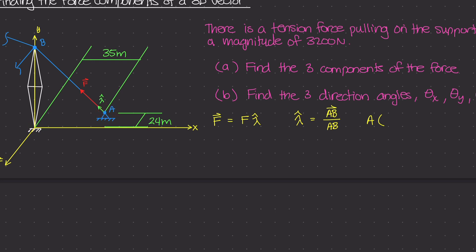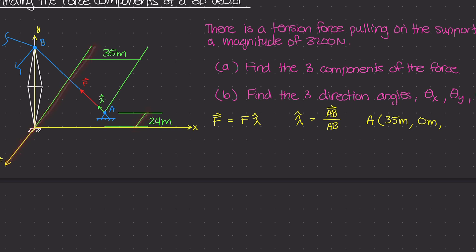For point A: going along the x axis, it has a coordinate of 35 meters as given by that dimension. The y coordinate is zero because the support is on the ground and the base of the tower is on the ground — they are on the same plane. For the z coordinate, from the origin it is 24 meters along the z axis, but since the positive z direction goes the other way, this 24 meters is negative. So point A is at (35, 0, −24) meters.